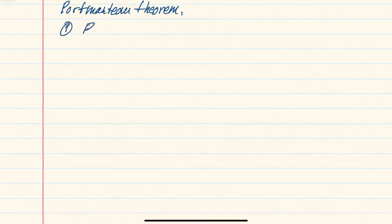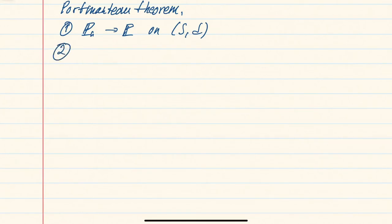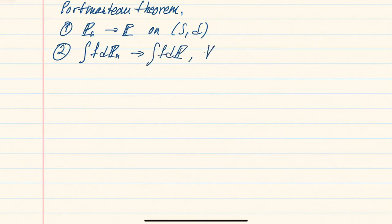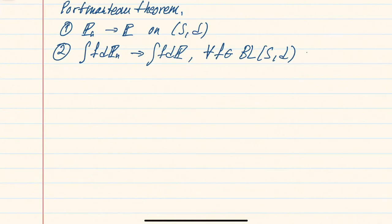The theorem says that if you have a sequence of probability measures convergent to some probability measure P on a metric space S with metric d, this is equivalent to: first, in the definition when you check convergence of integrals for continuous bounded functions, you can restrict yourself to bounded Lipschitz functions instead. This implication from one to two is obvious because bounded Lipschitz functions are just a subset of continuous bounded functions.